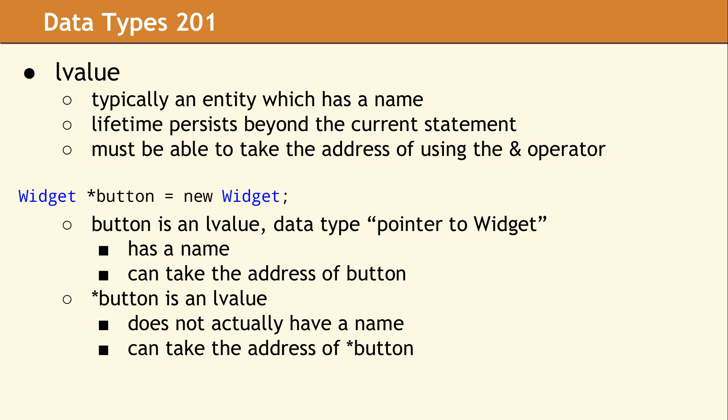If an expression is an L value, it will usually have a name. And you must be able to take the address of the expression using the ampersand operator. In this example, we have a couple of L values. Button itself is an L value. It's a pointer to a widget. It has a name, so it's definitely an L value. You can also take the address of it. It's a local variable. It has a well-defined address. Star button is also an L value. So the thing that you get when you dereference button is also an L value. It doesn't have a name, but you can take the address of it. So it has a location in memory. It has its own identity. Therefore, it is an L value.